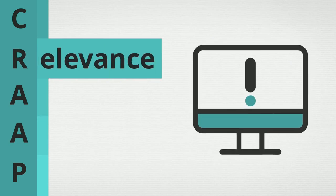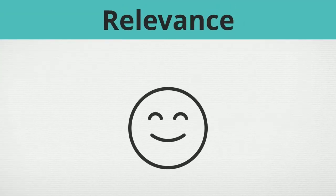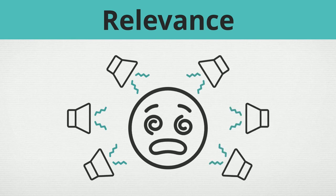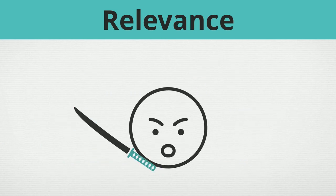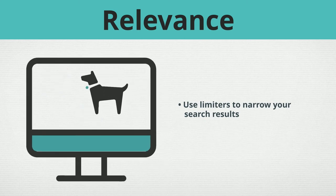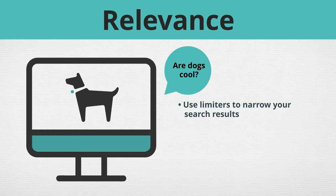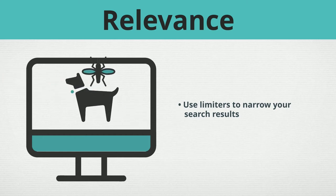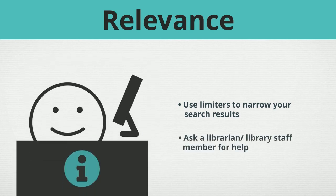Relevance. How important is this information for your current needs? When it comes to finding information, there can be a lot of noise getting in the way of what you want to learn. It can be annoying and even a bit overwhelming. But there are ways to cut through the clutter. You can use limiters to narrow your search results even further. Ask yourself if the information is even related to your question or topic. Information that's unrelated to your topic can be a distraction. Stay focused. You might not find the perfect answer right away — that's okay. You can also ask a librarian or other member of the library staff. They really don't mind. Be persistent, and you may be rewarded with the information you were looking for.